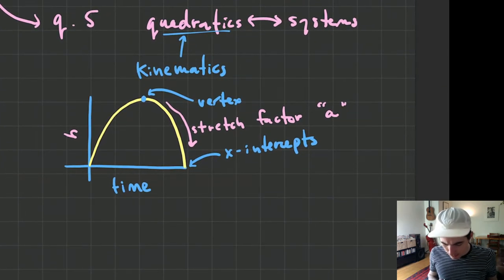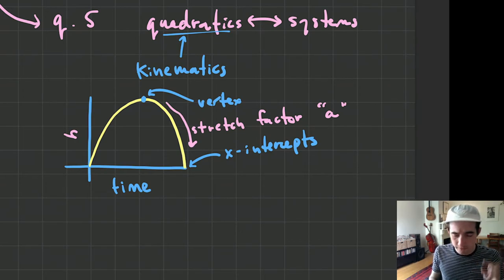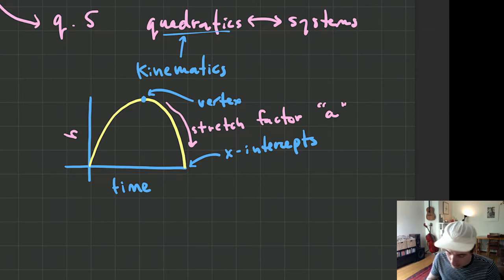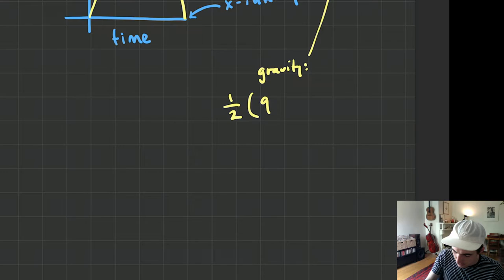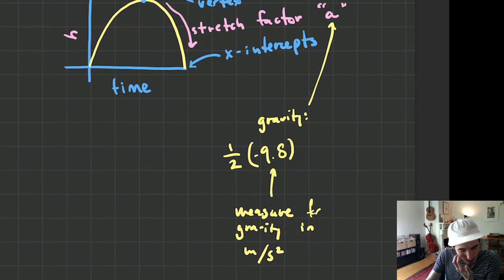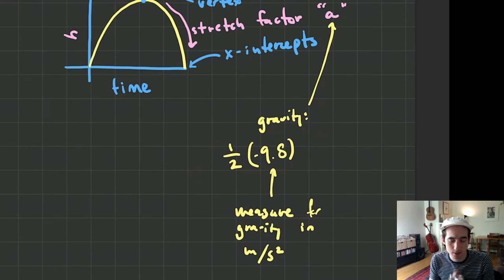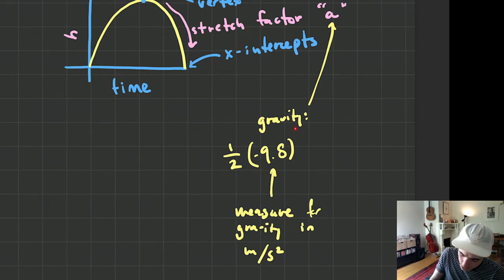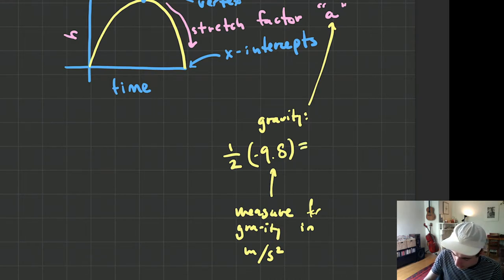With kinematics, this is where things get a little bit confusing — this is the one piece of information that you don't have. The stretch factor for A when you're dealing with gravity is one half of negative 9.8. And 9.8 is the measure for gravity in meters per second squared. So our stretch factor is negative 4.9.